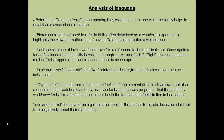Now let's look at the language. Referring to Catrin as 'child' in the opening line creates a stern tone, which instantly helps to establish a sense of confrontation. The phrase 'fierce confrontation' is used to refer to birth, and as mentioned earlier, birth is supposedly seen as a miraculous, wonderful event in which the parents are eternally grateful for having a wonderful child — but not in this case. This highlights the view the mother has of Catrin, and 'fierce confrontation' can also create a violent, almost animalistic tone.